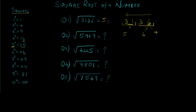Now we need to find out which number comes at the units place — 6 or 4. In order to do that, we add 1 to 5 and multiply it with 5. That would be 5 times 6 which equals 30. Now we compare 30 with 31, and since 31 is larger than 30 we select the larger value out of 6 and 4, which is 6. So the units place is 6 and this is our final answer. If you calculate the square of 56 you get 3136.